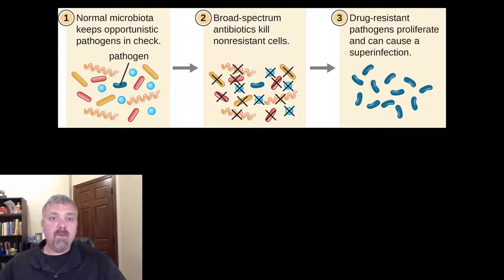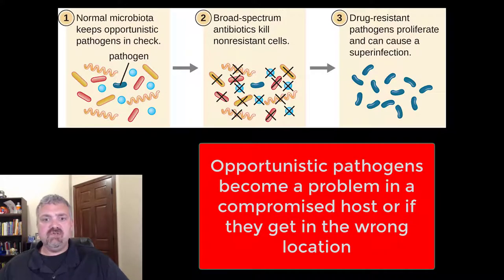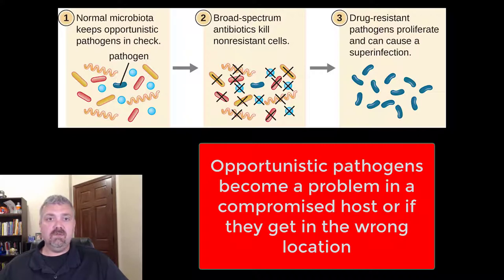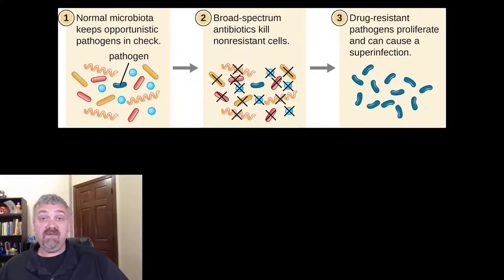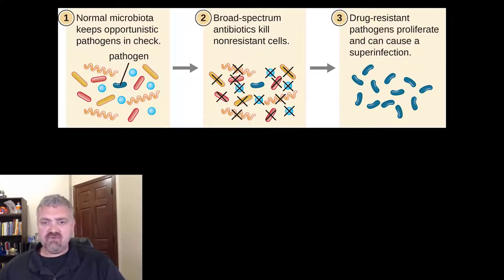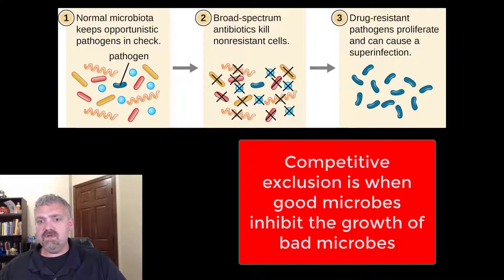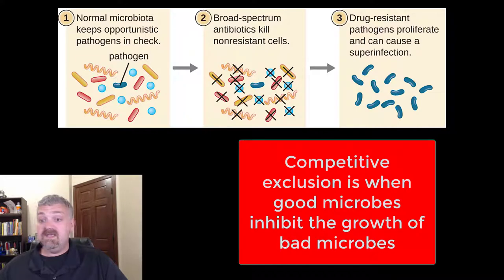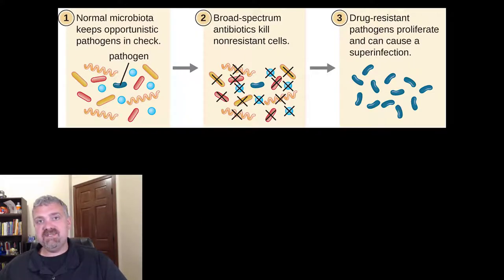Looking at number one: the normal microbiota keeps opportunistic pathogens in check. An opportunistic pathogen is one that generally isn't going to cause disease in a strong host — it becomes a pathogen in a compromised or weak host, or if it gets in the wrong location. The number one benefit of having a strong, healthy, robust microbiome is competitive exclusion. As long as your microbiome is full of good organisms, they hold the bad ones in check. A perfect microbiome might still be 80% good bacteria and 20% bad bacteria, but those good bacteria are what hold the bad ones in check.